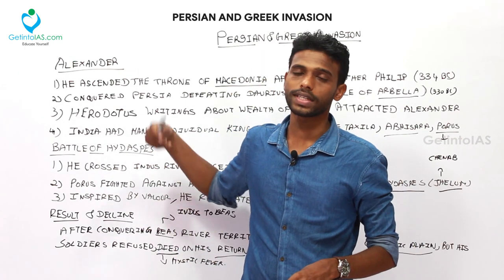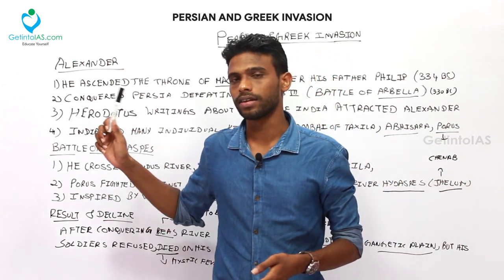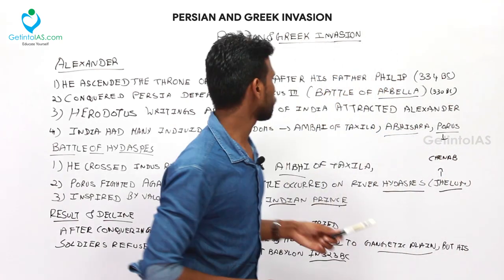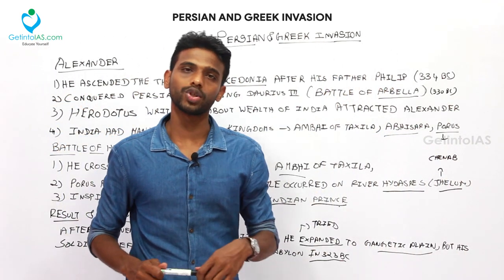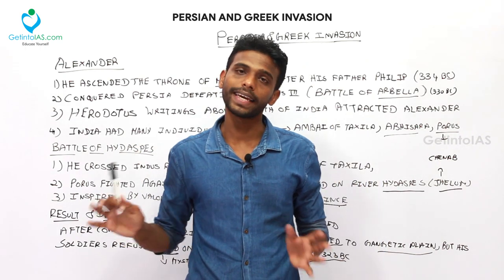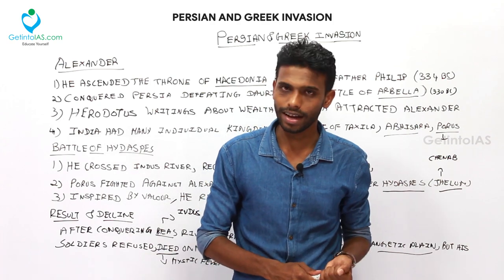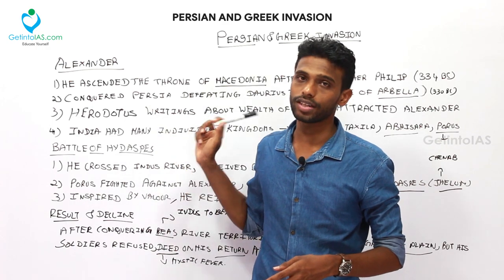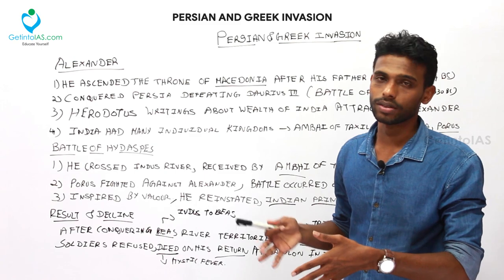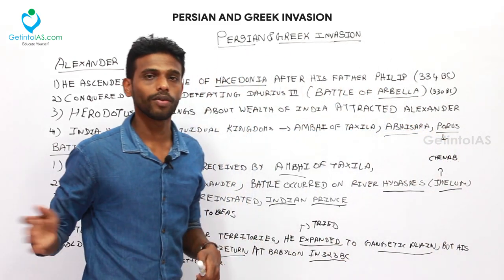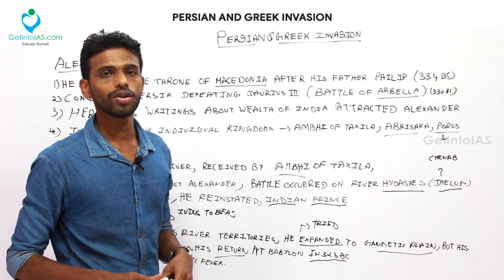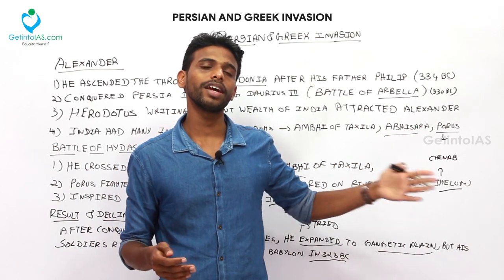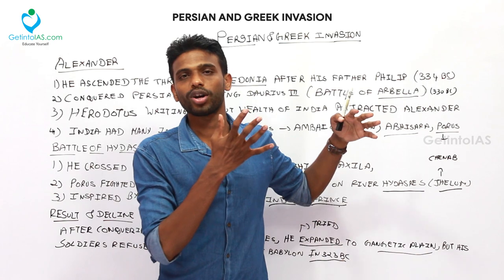To revise: Alexander was the first Greek king to invade India. He ascended the throne of Macedonia after his father Philip's death and defeated the Persian Empire. Reading the writings of Herodotus — the father of history — he became interested in the wealth of India. He also believed that after India lay only seas, meaning he could conquer the entire eastern part of the world.